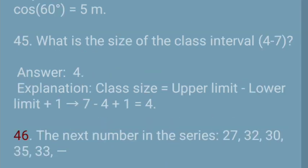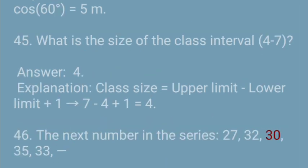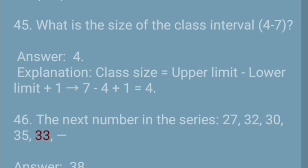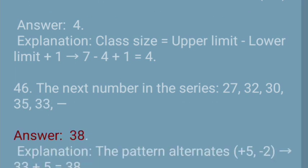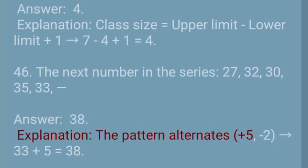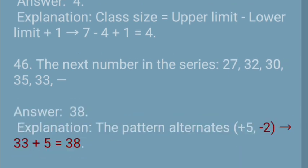Question 46: The next number in the series 27, 32, 30, 35, 33 — Answer: 38. Explanation: The pattern alternates +5, −2 → 33 + 5 = 38.